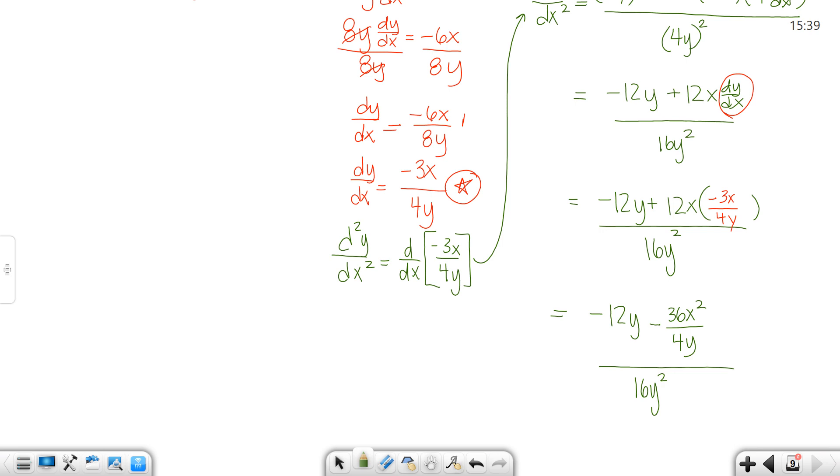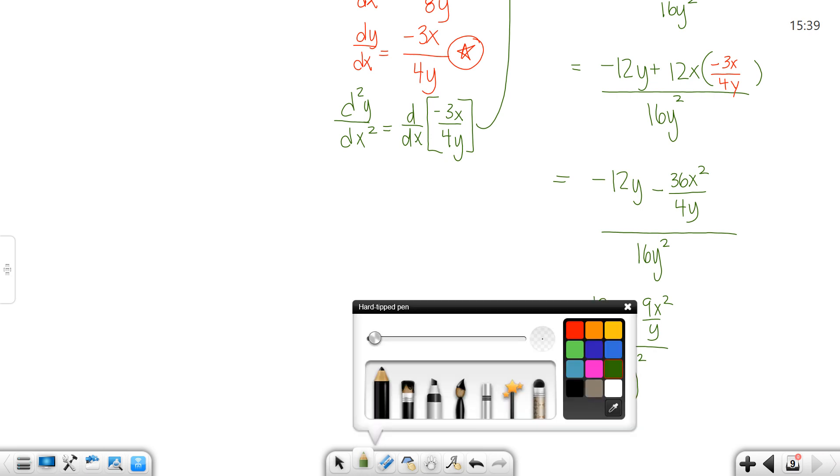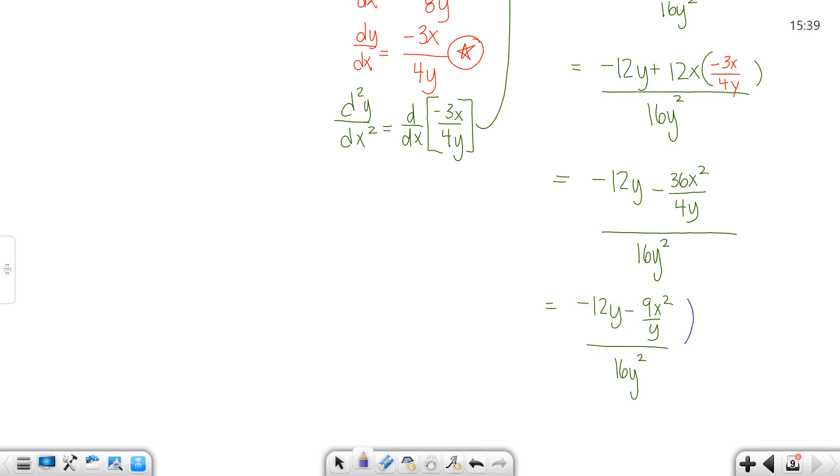Now of course that 36 and 4 simplifies, so that's 9x squared over y. Now we need to simplify that complex fraction. You see that you have a denominator of y, so you can use a rule back from algebra days that says I'm going to multiply the top by y and the bottom by y.